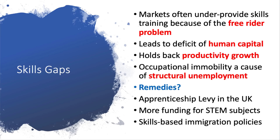First of all, skills gaps. This is linked to the concept of occupational immobility. Most labour markets suffer from skills gaps, in part because employers may under-provide the amount of skills training that the market requires. This is linked to the free rider problem — a business might train someone up but be unable to retain them, with workers leaving for rival firms. This leads to a deficit in human capital, which can limit employability, hold back productivity growth, and be a cause of structural unemployment.